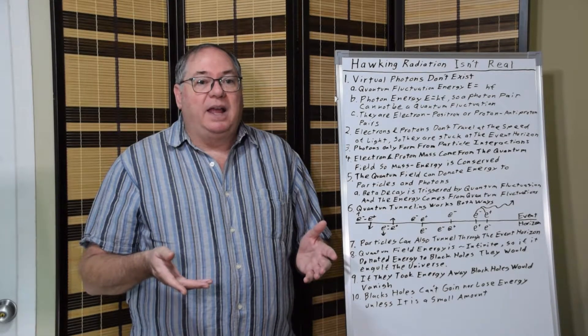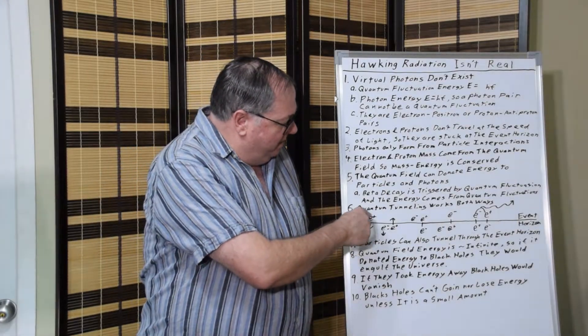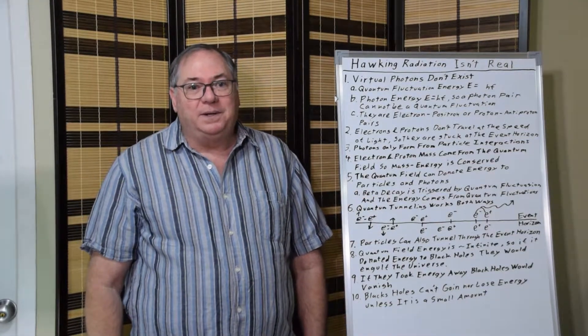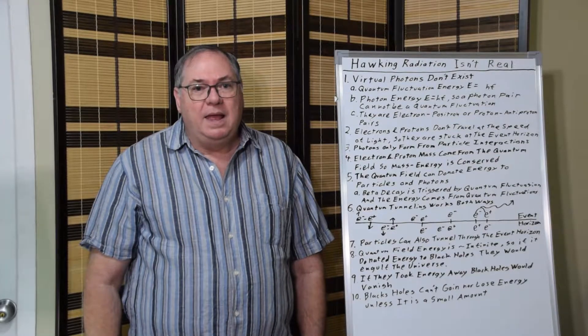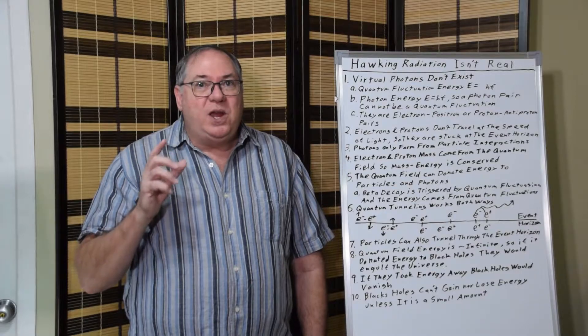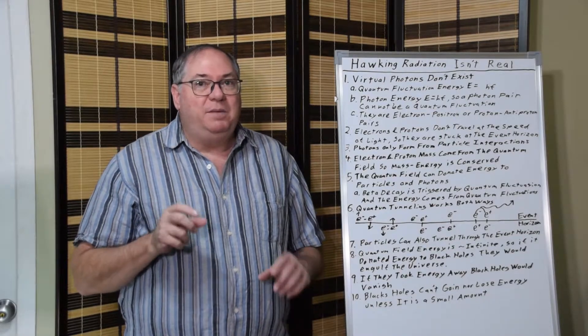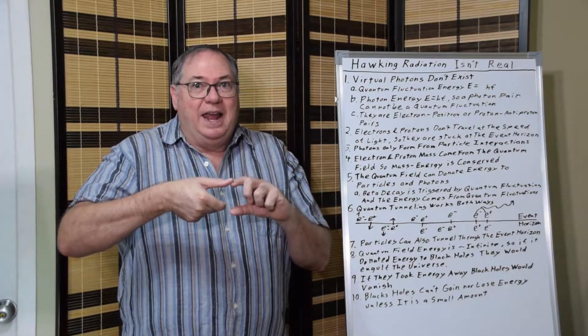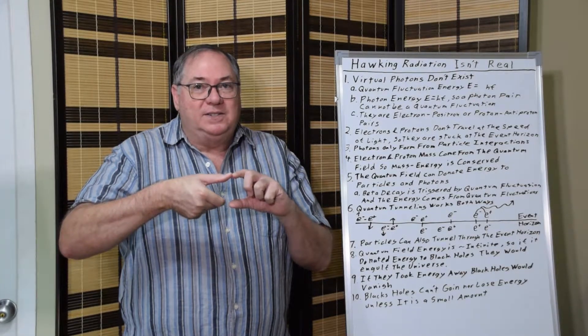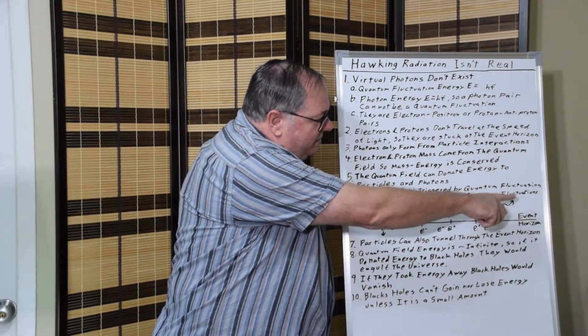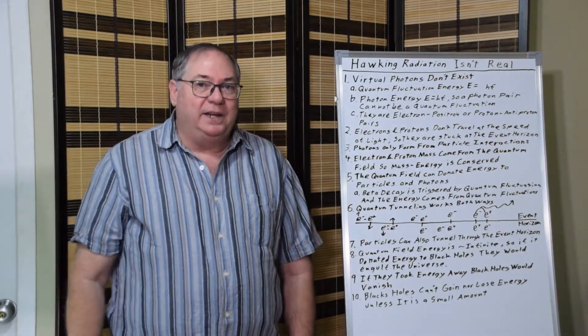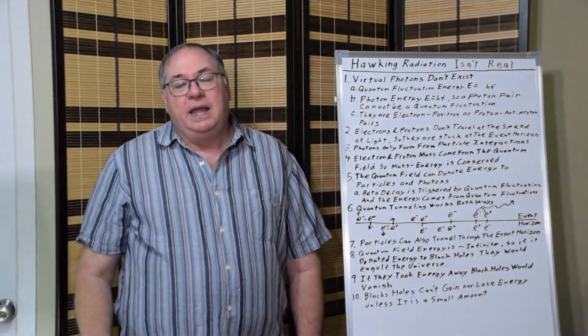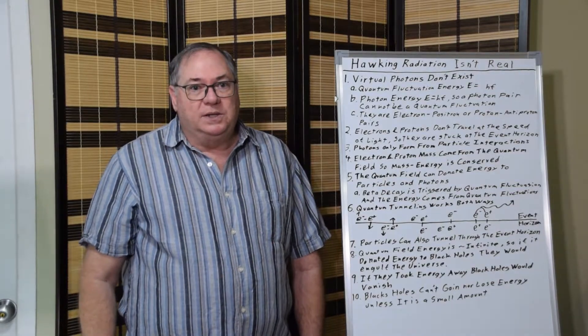So if you have an electron-positron quantum fluctuation where one of them happens to cross the event horizon, they're still stuck there. They're not going anywhere. And you're only going to get a photon if you have simultaneously an electron-positron pair and a positron-electron pair across the event horizon together, and the electron and the positron that stay on the outer side annihilate with each other producing a photon. That's actually on that little drawing. That's the only way you get a photon coming off. So it's not as common as what Hawking would have you suspect.